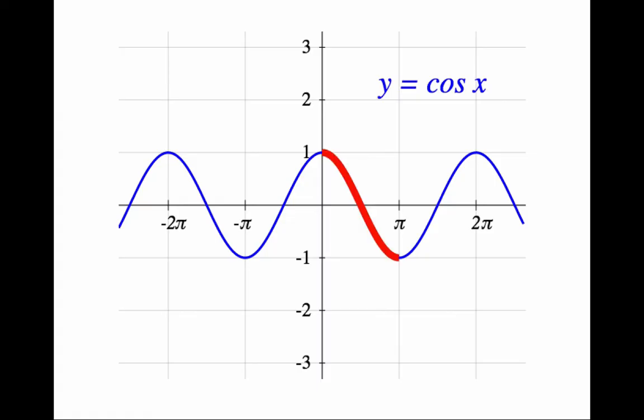In this case, we cannot pick a domain symmetric around 0. It is customary to restrict cosine to the function defined by this piece of the graph in red. And we will call the inverse of this restriction arccosine.